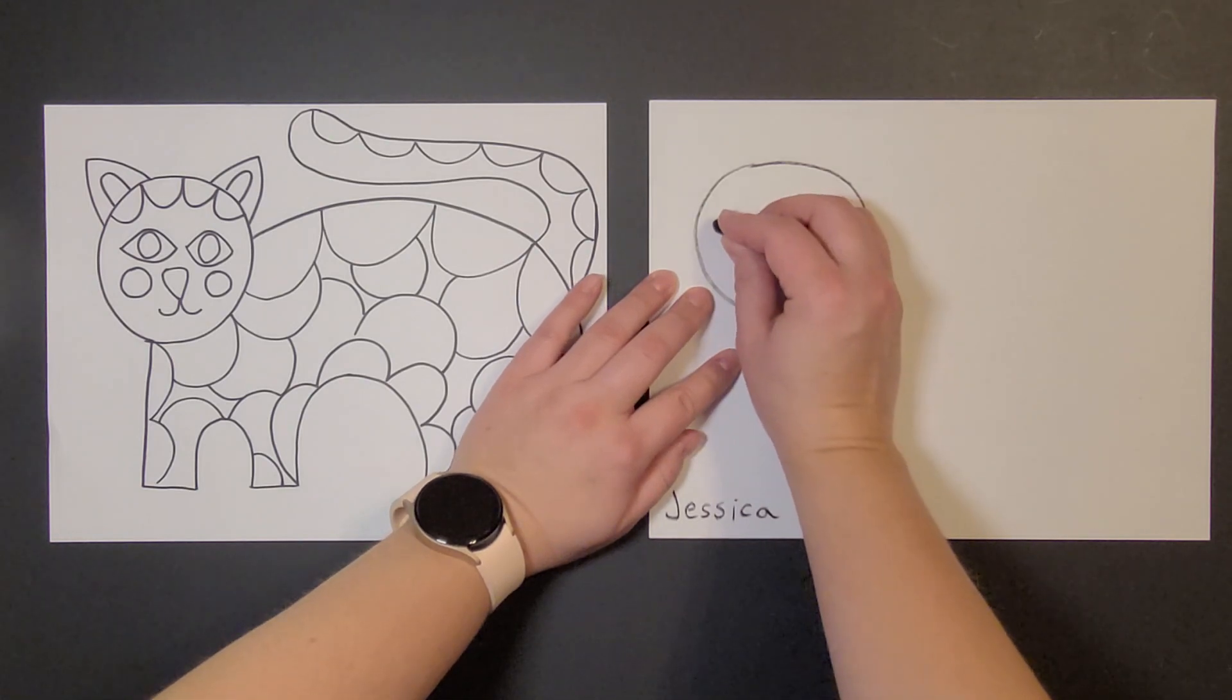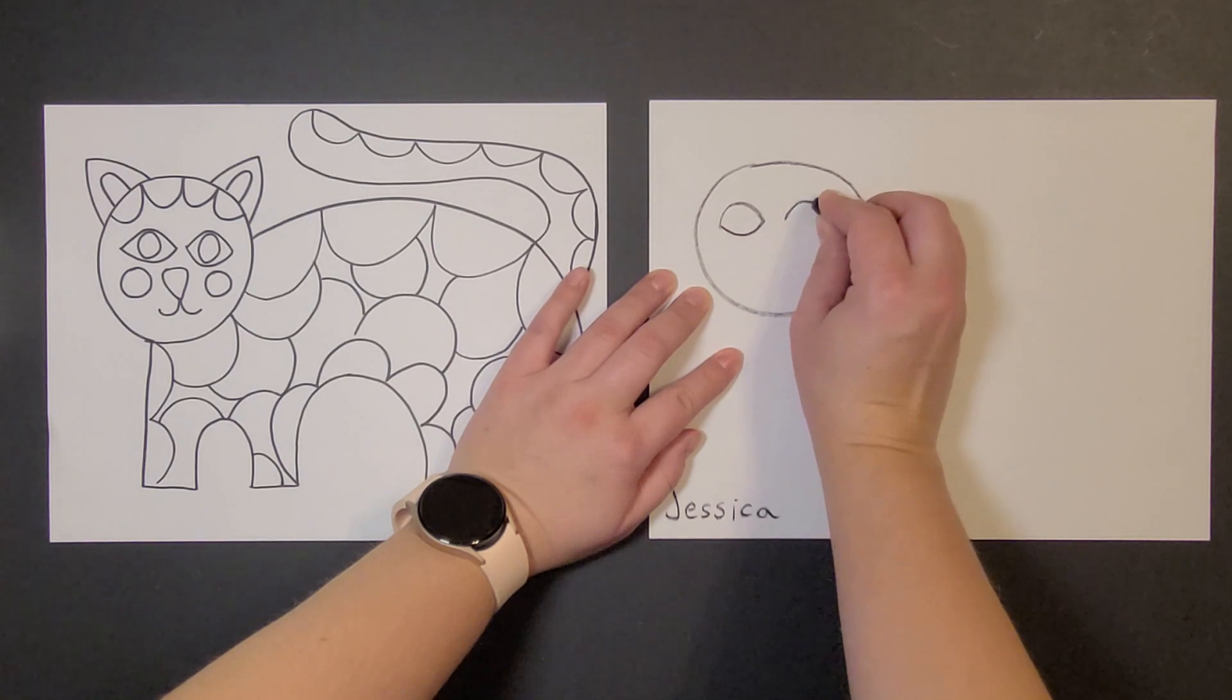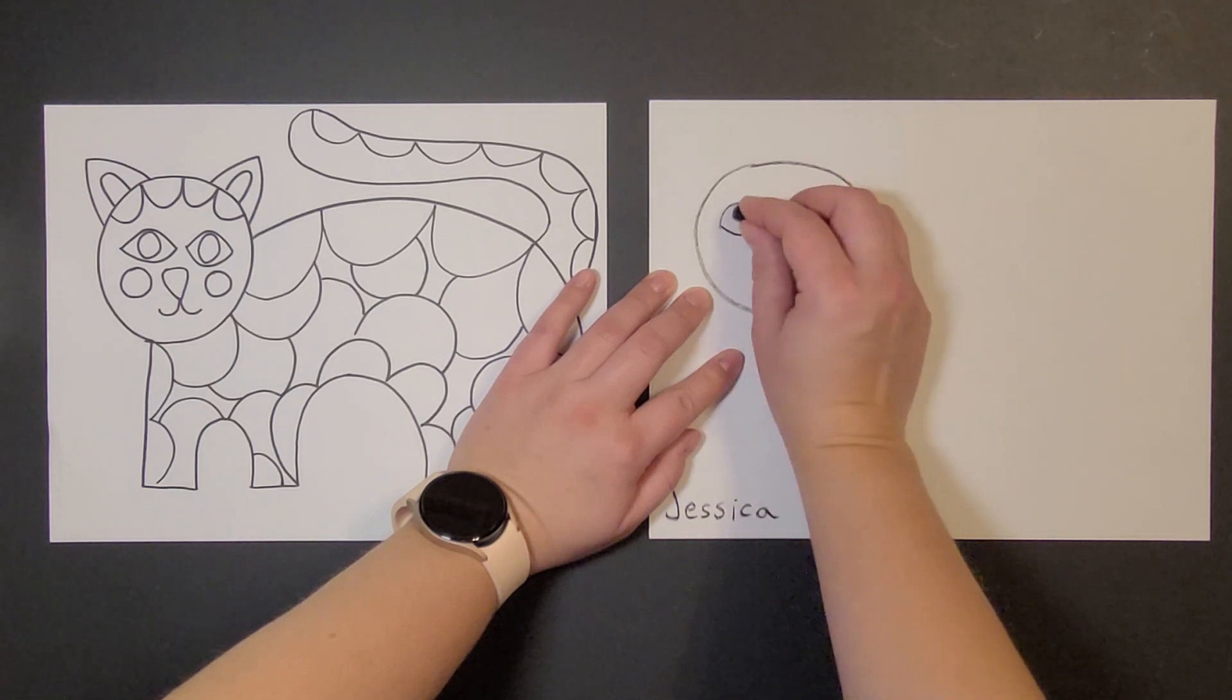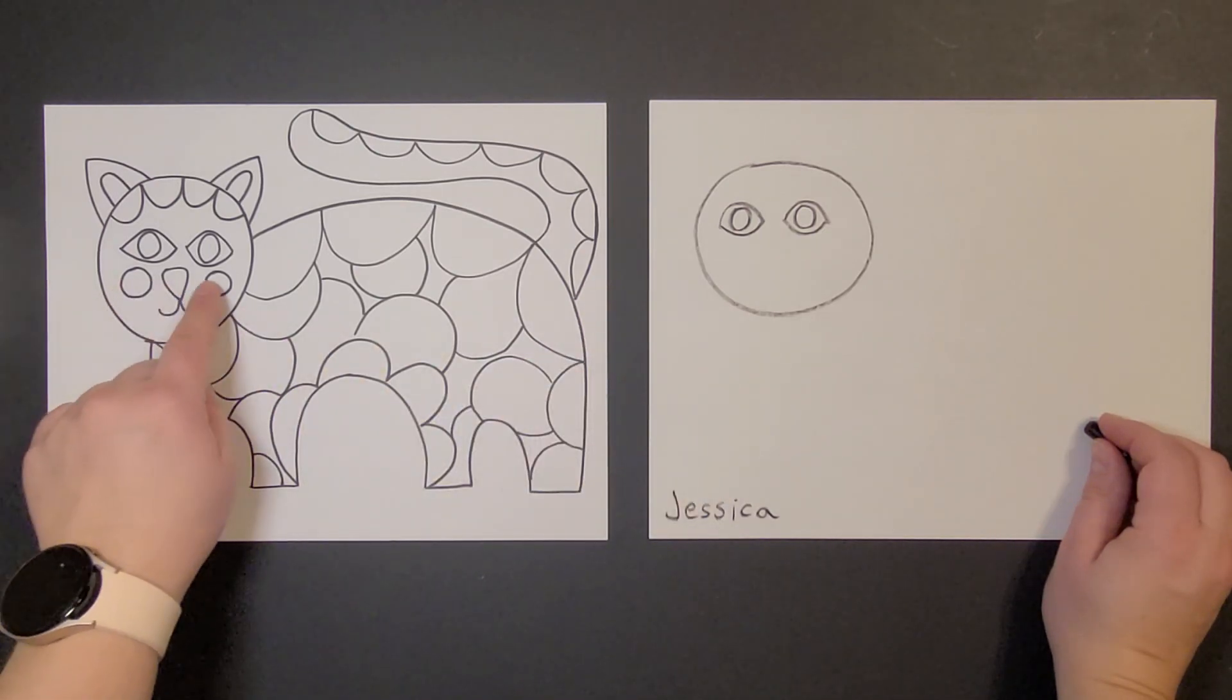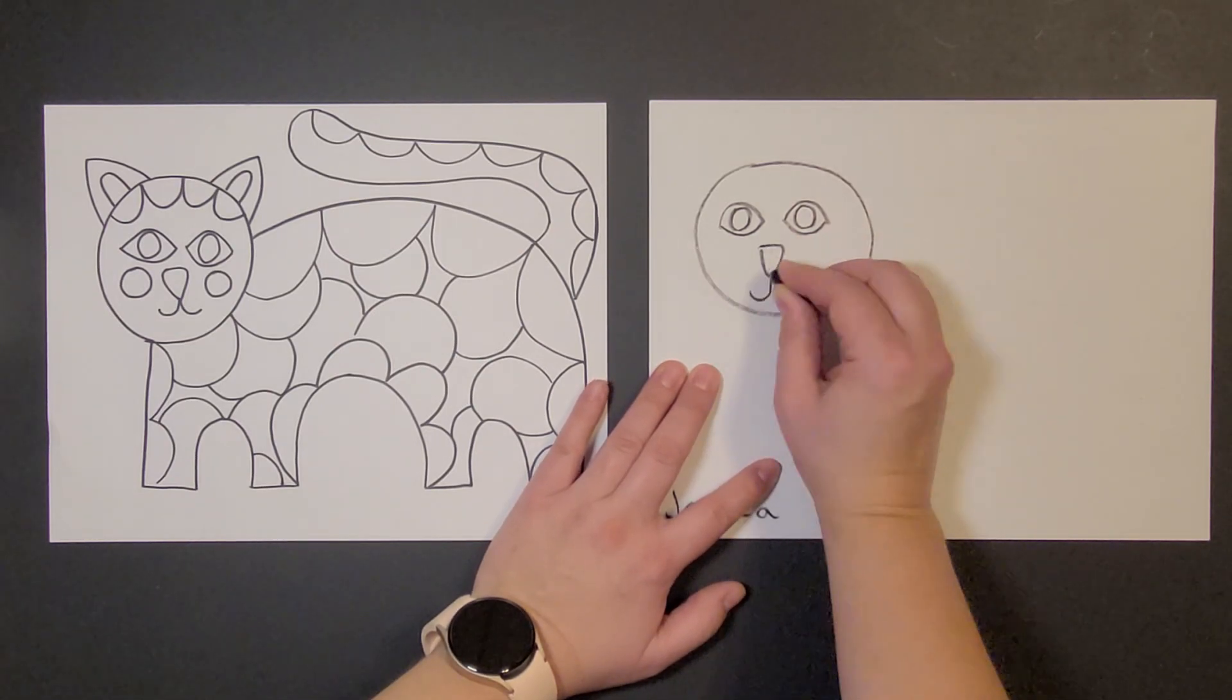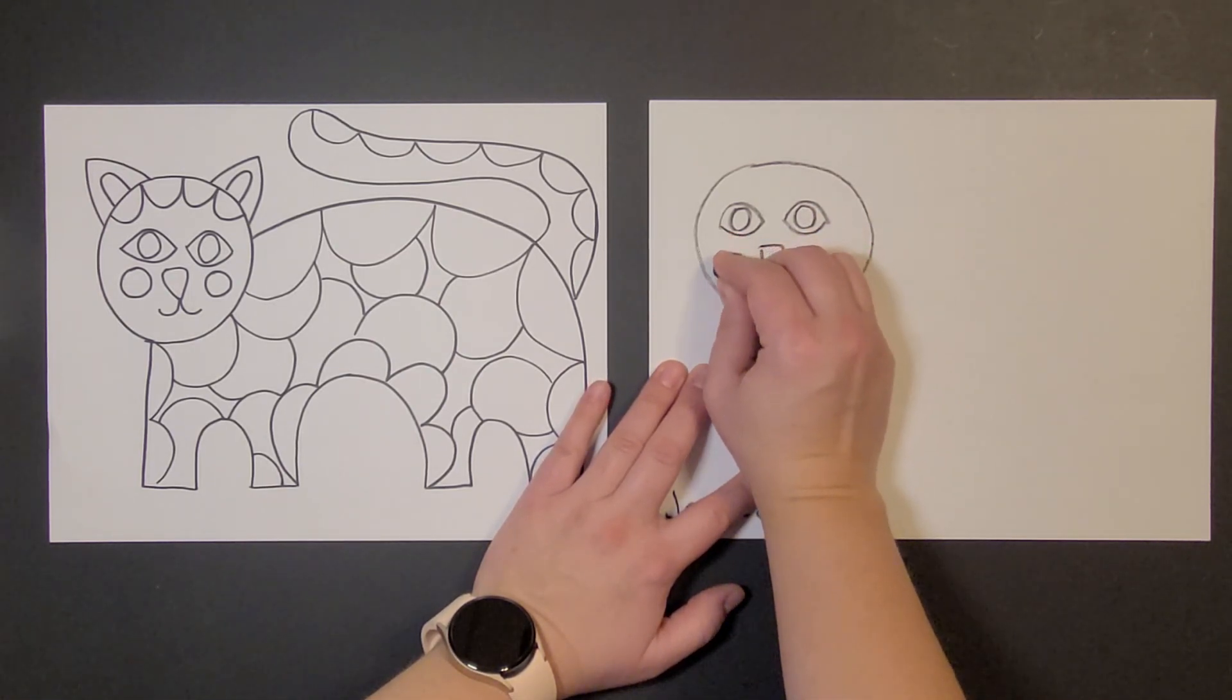We can do some almond-shaped eyes, circles. I'm gonna put the nose and the cute little cheek circles in. There's the nose, the mouth, little cheek circles. Cheerful little kitty.